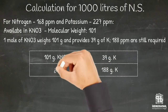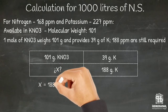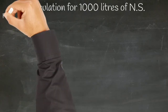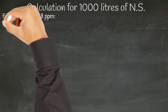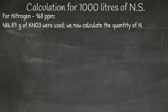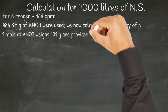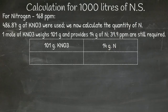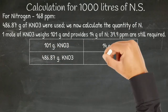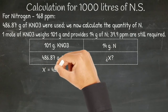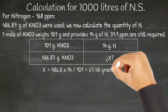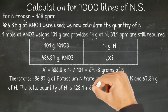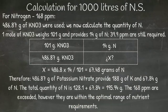X equals 188 times 101 divided by 39, which results in 486.87 grams of potassium nitrate. Moving on to nitrogen: using 486.87 grams of potassium nitrate, and given that one mole weighs 101 grams and provides 14 grams of nitrogen, X equals 486.87 times 14 divided by 101, resulting in 67.48 grams of nitrogen. So 486.87 grams of potassium nitrate provides 67.48 grams of nitrogen — these exceed the required parts but remain within the optimal range of nutritional needs.